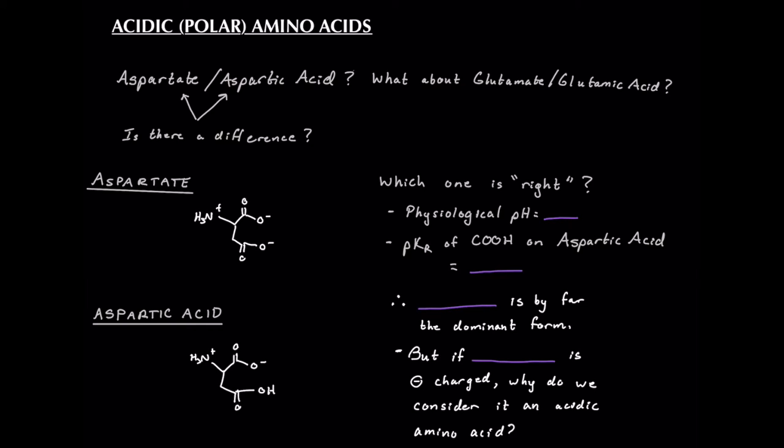Alright, so what exactly is the difference between aspartate and aspartic acid? Why do we call each the way we do? Well, there actually is a qualitative difference between aspartate and aspartic acid and between glutamate and glutamic acid. Aspartate is the ionized form. So by ionized, we mean we have this negative charge because our proton has been given up to solution. Now aspartic acid is the protonated form, or it still has its proton.